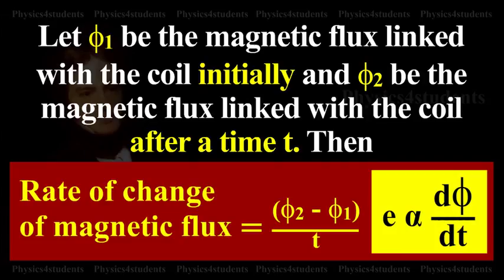According to Faraday's Second Law, the magnitude of induced EMF E is directly proportional to phi2 minus phi1 divided by T. If D phi is the change in magnetic flux in a time DT, then the above equation can be written as E directly proportional to D phi by DT.